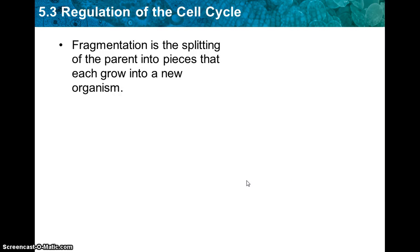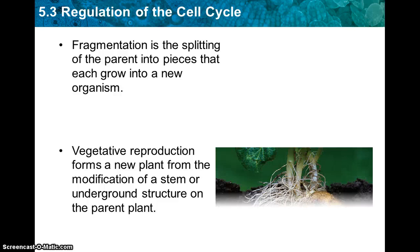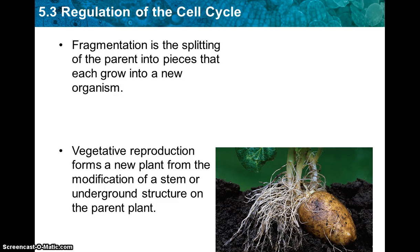Fragmentation is the splitting of the parent into pieces that grow into a new organism. Flatworms, starfish, and sponges do this — if you break off a piece of a sponge it'll grow a whole new sponge, and if you cut a flatworm in half it'll grow two flatworms. Vegetative reproduction forms a new plant from a modification of a stem or underground structure of the parent plant, which happens with potatoes and strawberries.